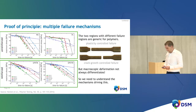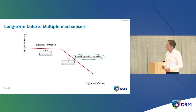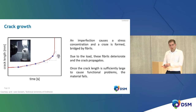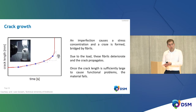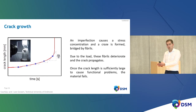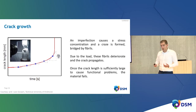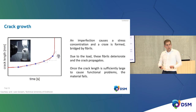Focusing on crack-growth controlled failure: if you have a certain imperfection or impurity in your material, you get a huge stress concentration, which forms a craze bridged by fibrils — these are still load bearing. Due to the load, these fibrils gradually deteriorate and the crack advances. Once the crack reaches a critical length — for example, reaching the outside of a pipe — you have failure. You can measure crack propagation using optical or compliance techniques, tracking crack evolution as a function of time.